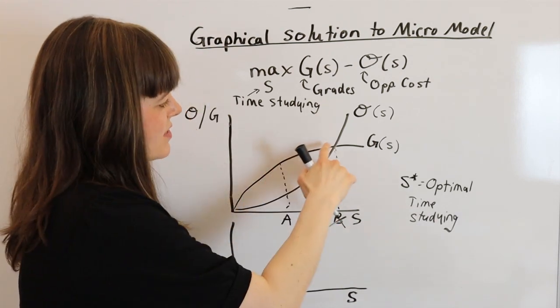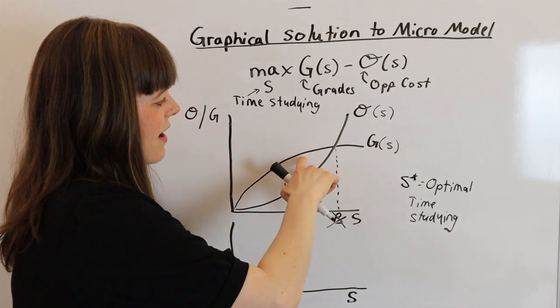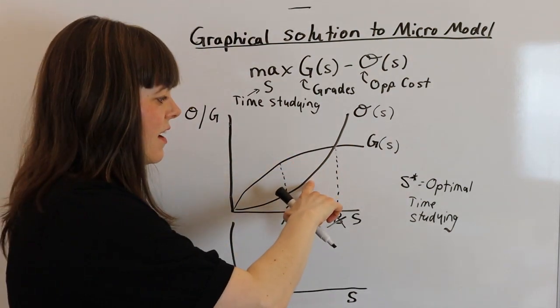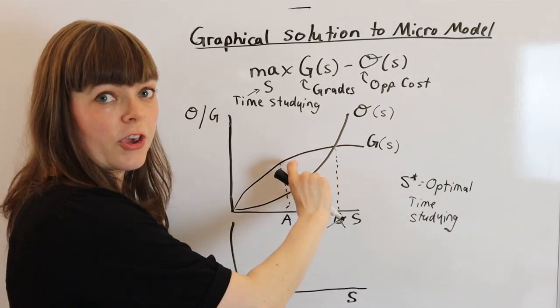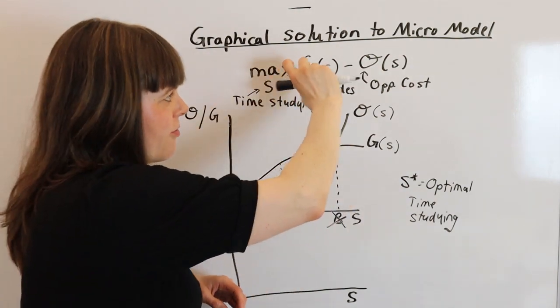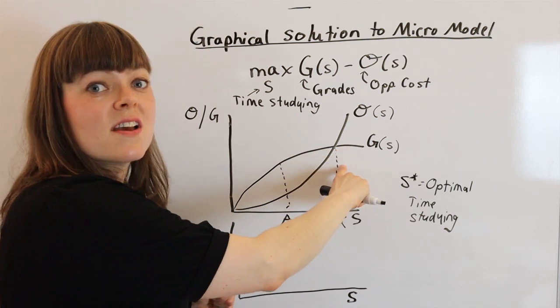or really any point in this range, we have higher grades than the value we're giving up for the time spent studying, so we're going to have a positive value. And a positive value for our objective function is going to be better than zero.